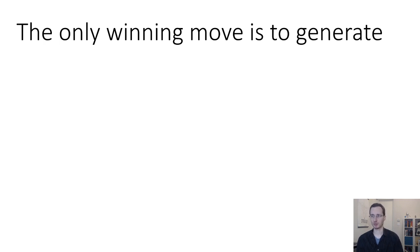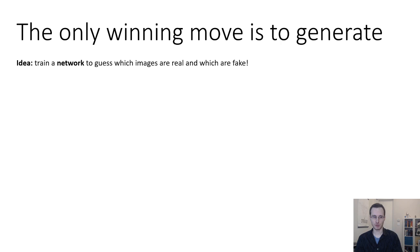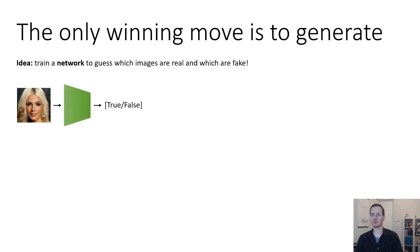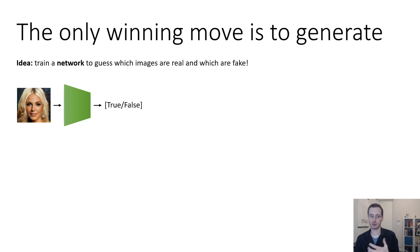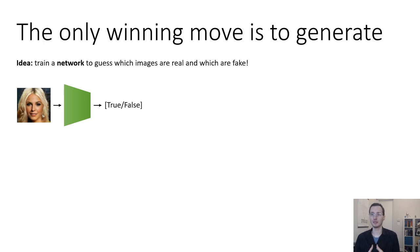Here's how we're going to set this up. We're going to set up a game where the only winning move is to generate realistic images. The idea is to train a network that guesses which images are real and which are fake — essentially a classifier, just like the classifiers we learned about in computer vision. It looks at an image and outputs a binary label: true or false. In reality this classifier outputs a probability between 0 and 1 — the probability that the image is a real image.